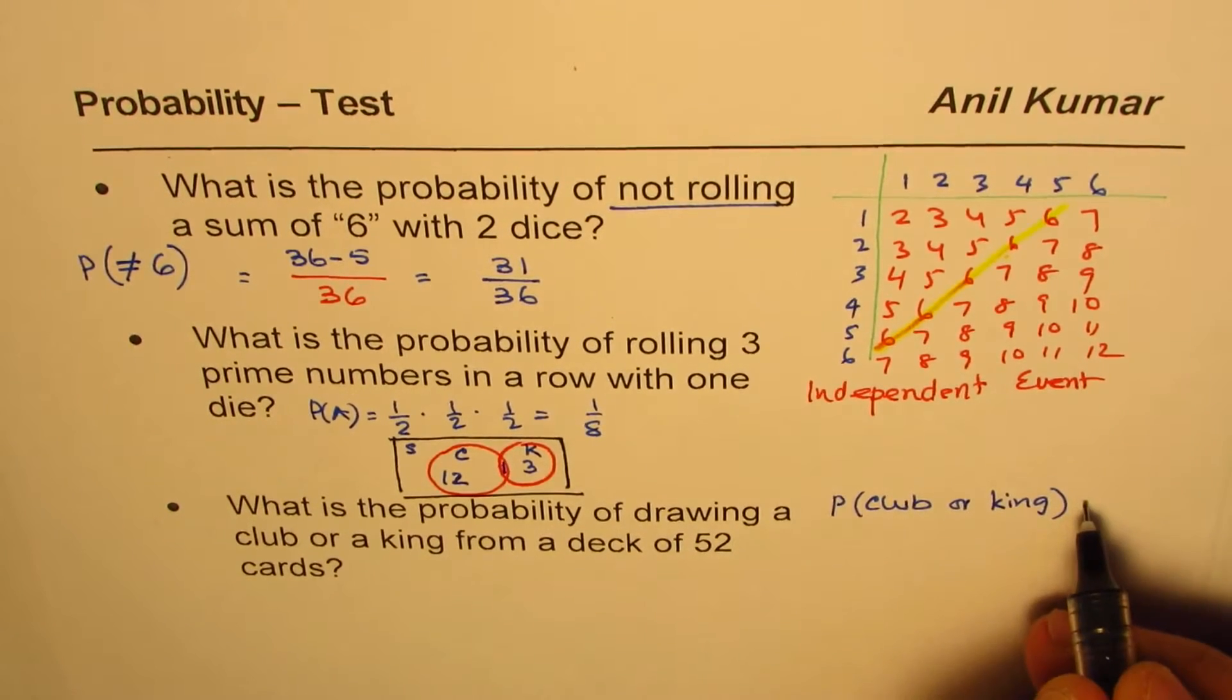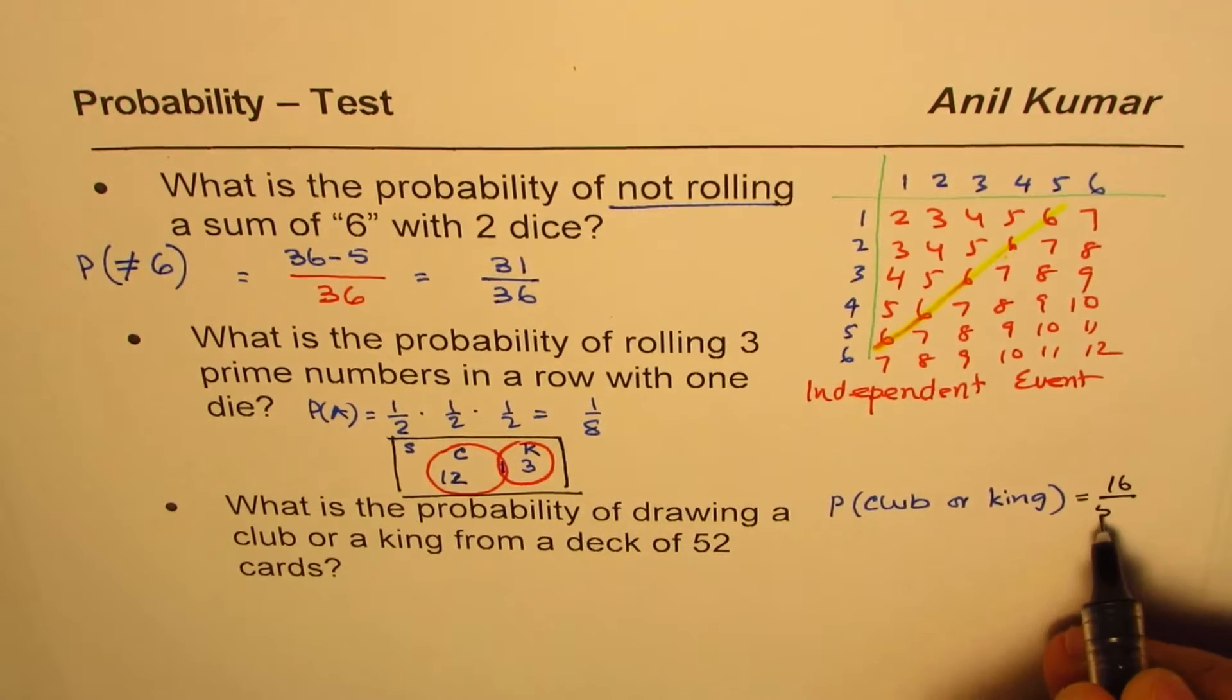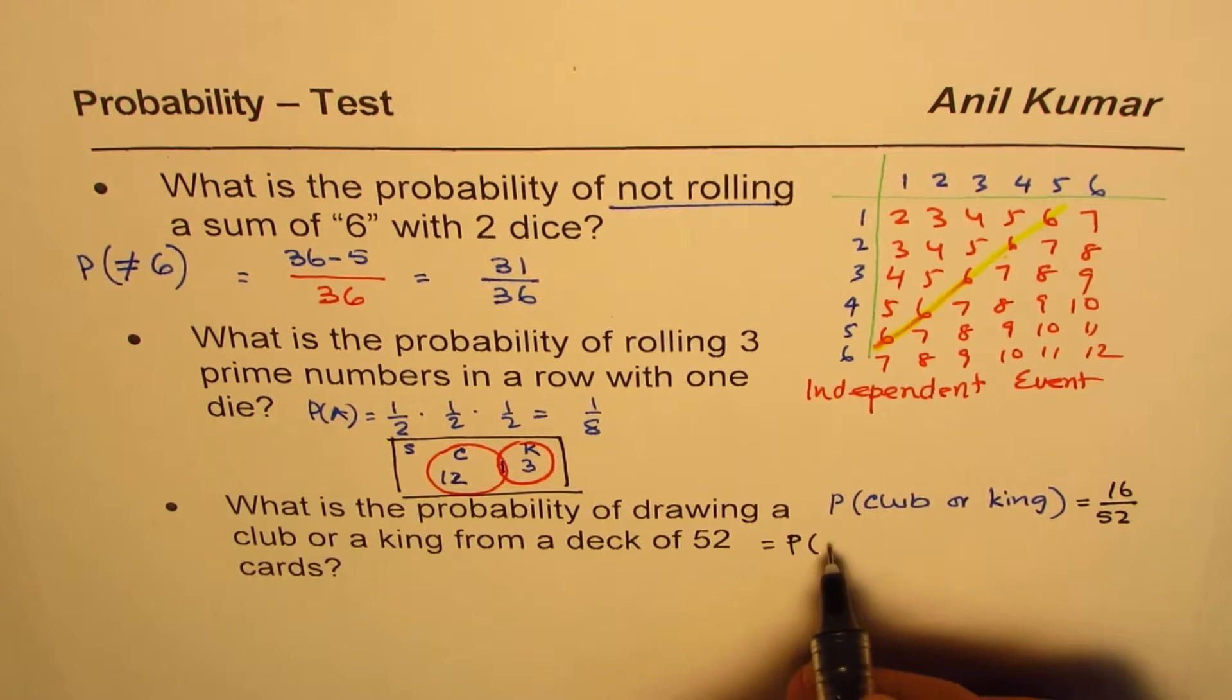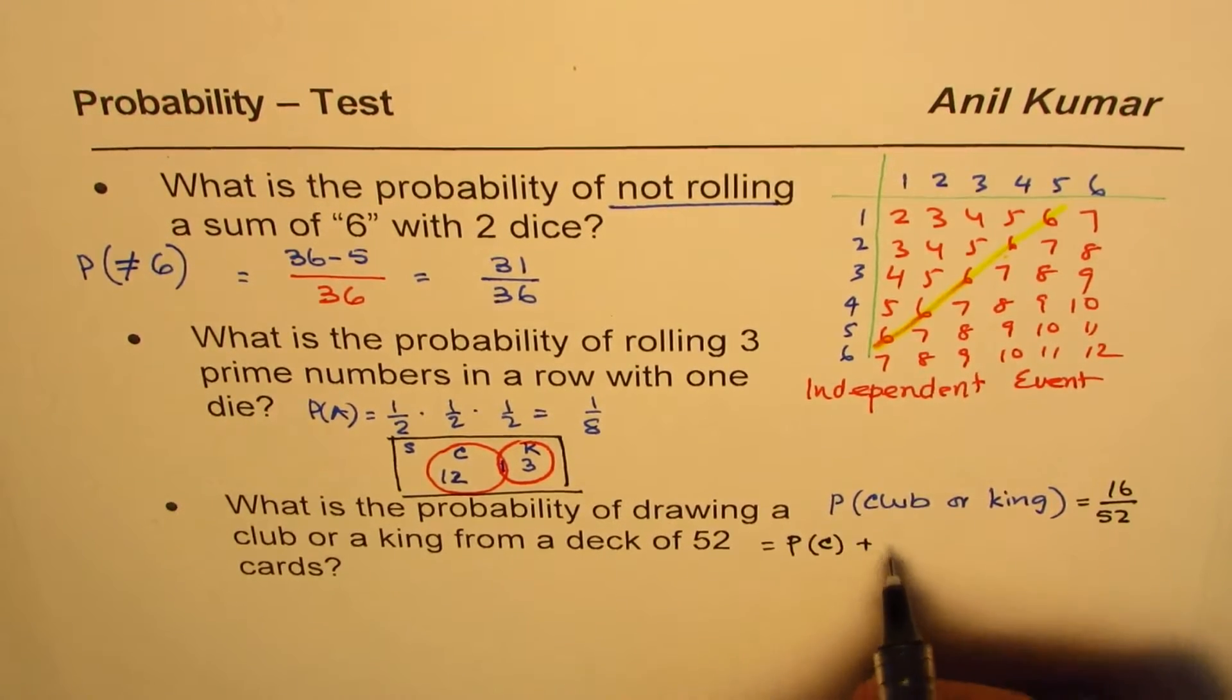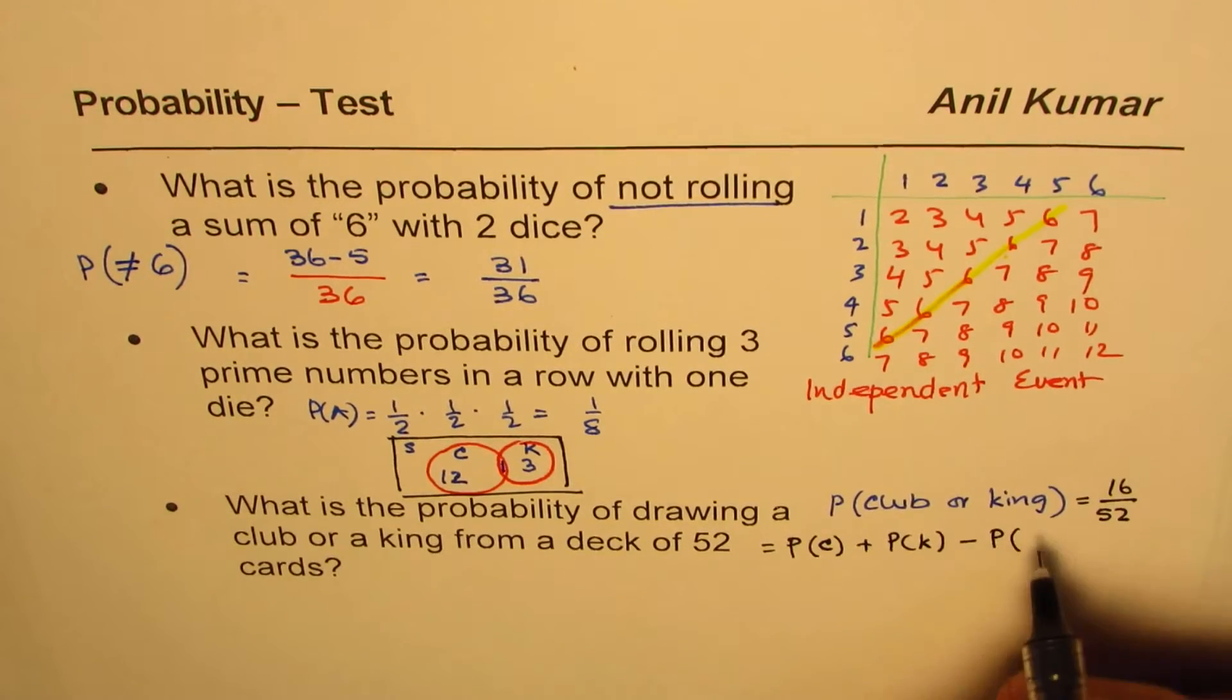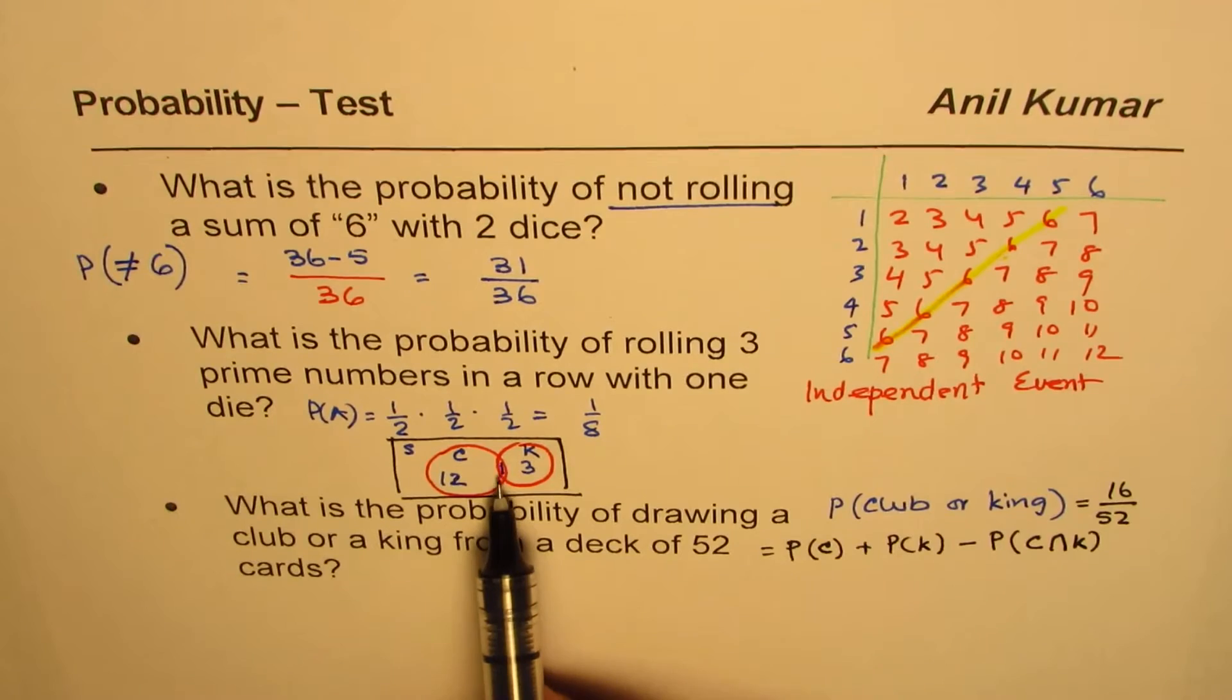So you could write this as 16 over 52 as your answer. Or if you want to use the formula, you know: probability of getting clubs plus probability of getting kings minus probability of clubs and kings, the intersection of these two.